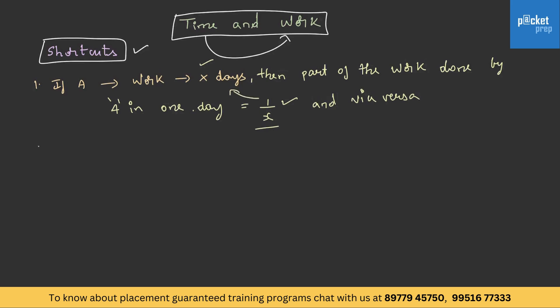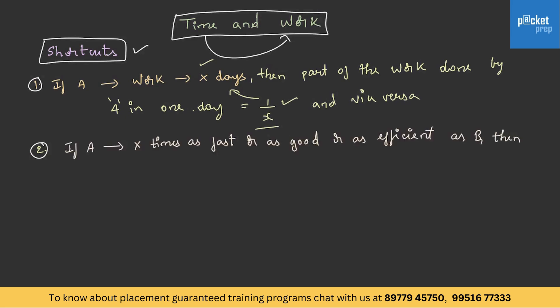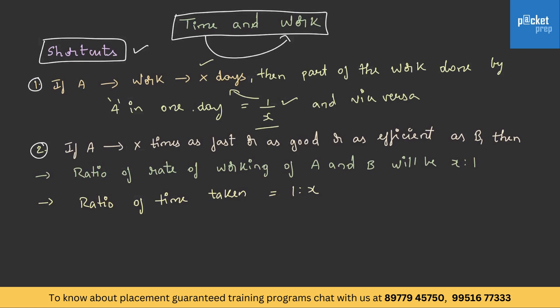The second shortcut: if A is x times as fast or as good or as efficient as B, then the ratio of rate of working of A and B will be x is to 1, and the ratio of their time taken is 1 is to x. So if A is x times as fast as B, the rate of working ratio will be x is to 1, and the ratio of time taken will be the reciprocal, which is 1 is to x.